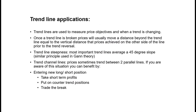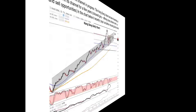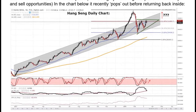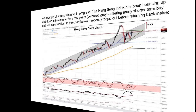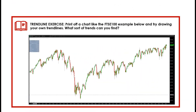Trend line applications include: price objectives when the trend is changing, strength of the trend (45 degrees is a very important and optimal angle), using channels to bounce prices between, and for entering long or short positions and profit/loss taking. Here on the Hang Seng is a typical channel example showing how price moved up and down in a range, popped out briefly, then went back into that range. Exercise: find a blank chart and practice drawing as many trend lines as you can across short, medium, and long term.